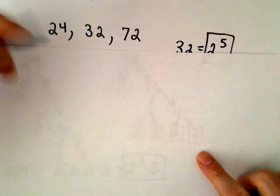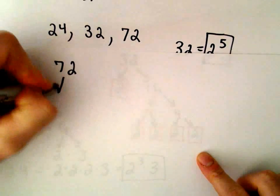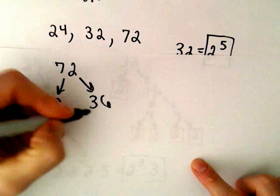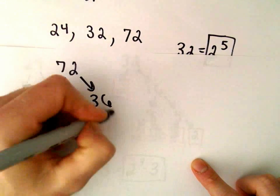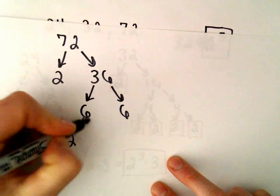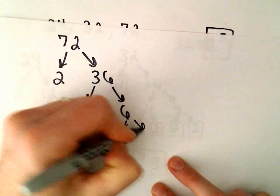Now I'm going to do the same thing for 72. That's 2 times 36. I can write 36 as 6 times 6. And I can write 6 as 2 times 3, 2 times 3.